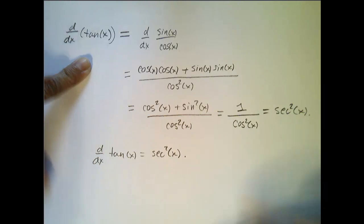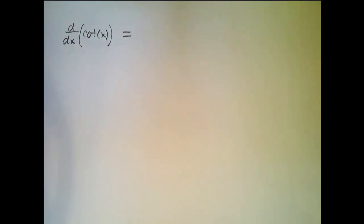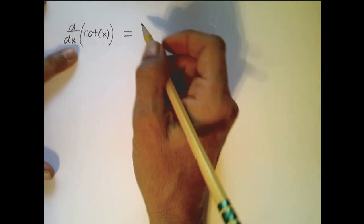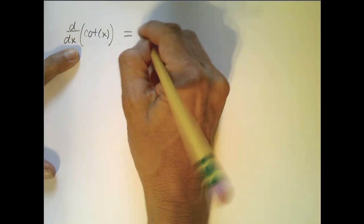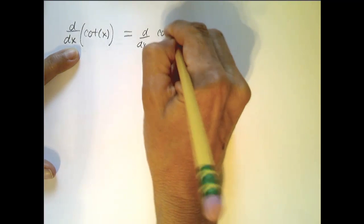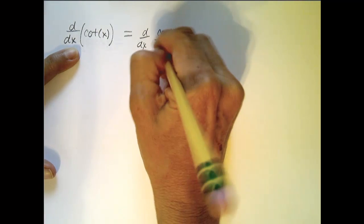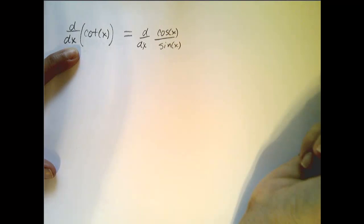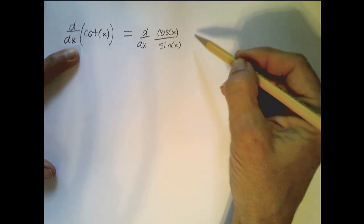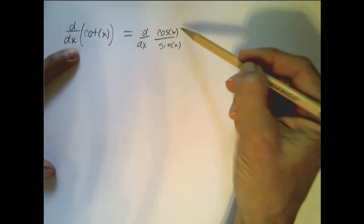So the derivative of tangent of x is secant squared of x. Now let's do the same thing to find the derivative of cotangent of x. Cotangent can be written as cosine over sine, so we apply the quotient rule again to this function.